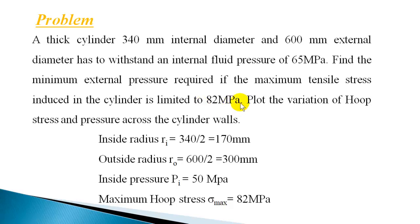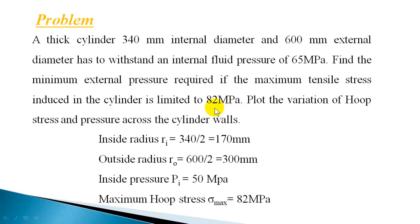Outside hoop stress is always less than the inside hoop stress, and longitudinal stress is always less than the hoop stress. So you can limit the maximum hoop stress to 82 MPa. Radial pressure is compressive and is less than the hoop stress: sigma C equals PR plus 2A, so PR is always less than sigma C and that is compressive. Inside radius is 170 mm, outside radius is 300 mm, inside pressure is 65 MPa, and maximum hoop stress is 82 MPa.